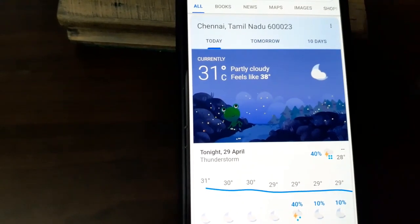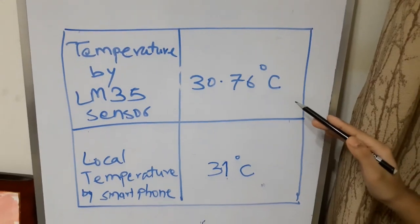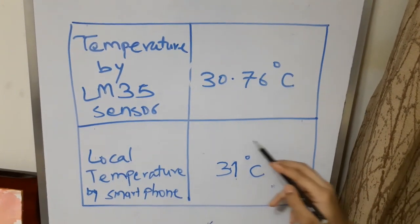Now, let us compare this reading with the reading from internet. So, you can see, currently, at my place, it shows it is 31 degrees Celsius. As you can see, the reading shown by our sensor is close to the internet reading.